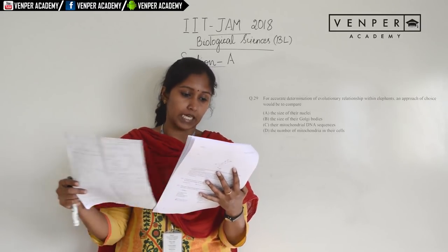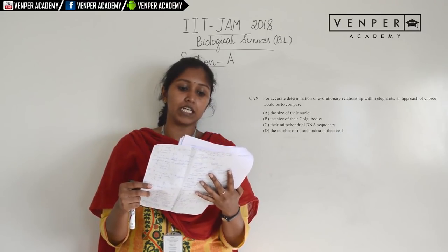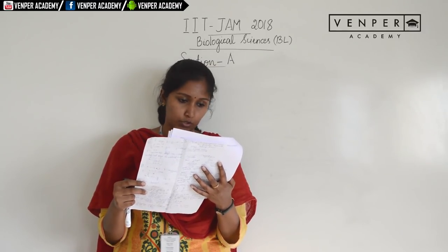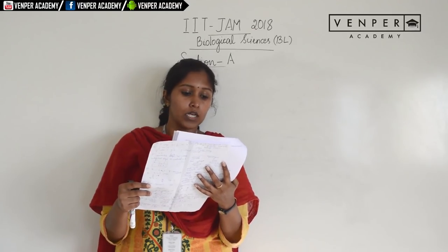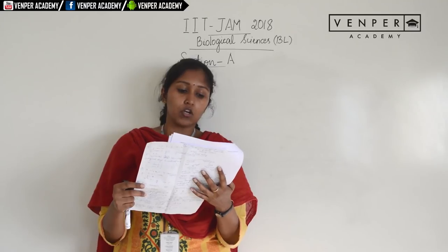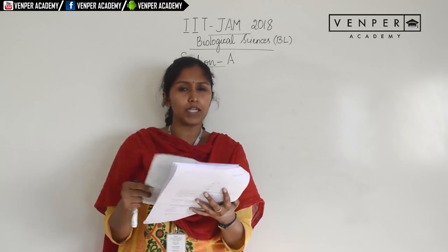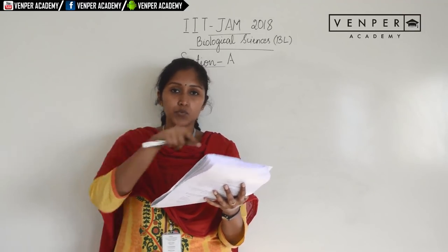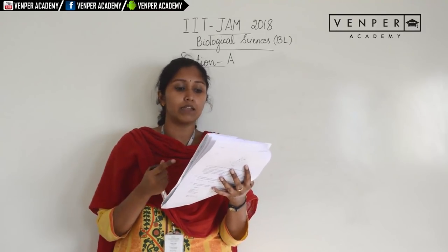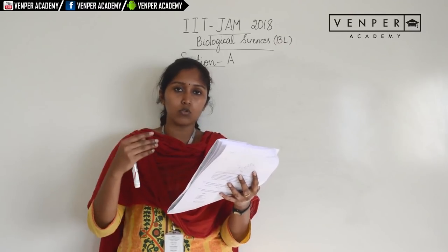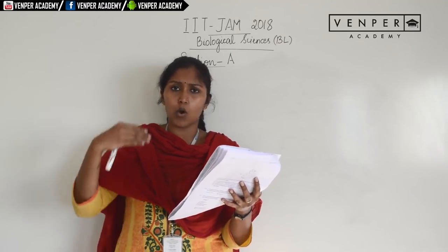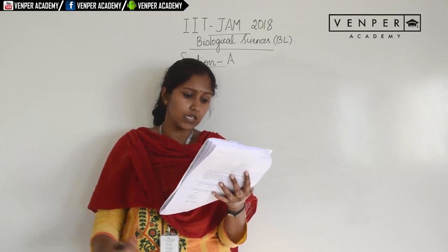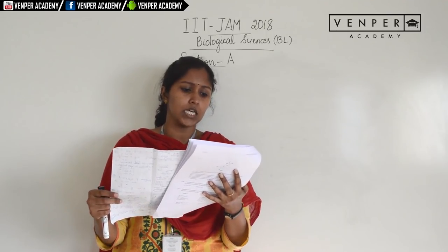Question 29: for accurate determination of evolutionary relationships within elephants, the approach of choice would be to compare their mitochondrial DNA sequence, option C. Mitochondrial DNA is passed from mother to both sons and daughters. Comparing mitochondrial DNA reveals relationships within a population and shows the progression of mutations across generations.